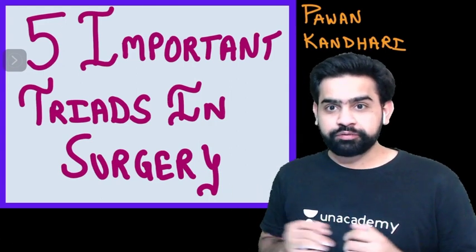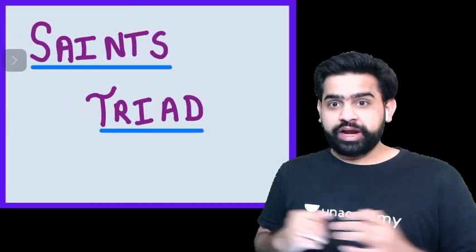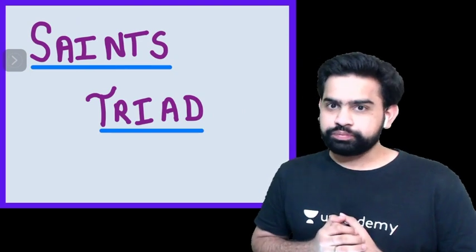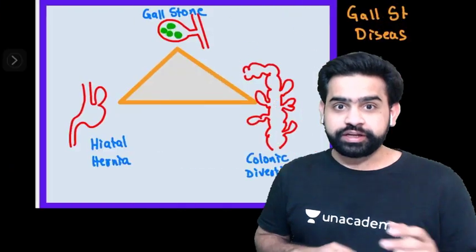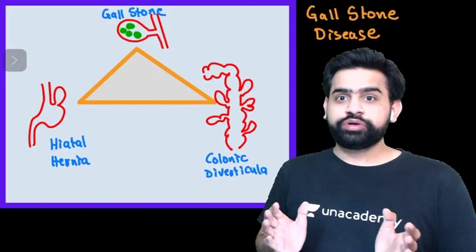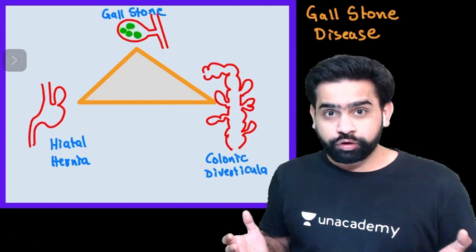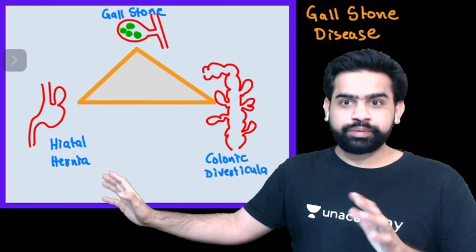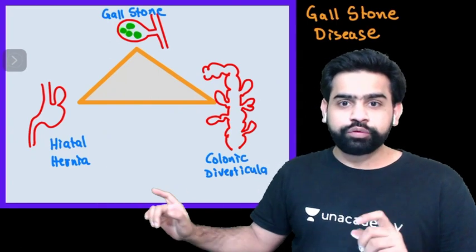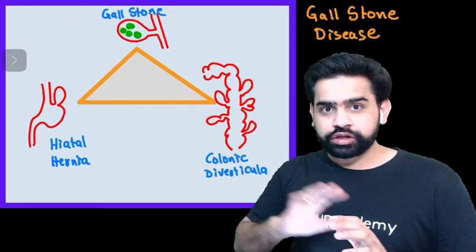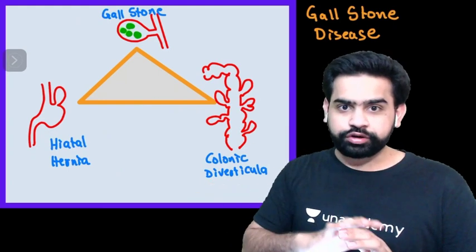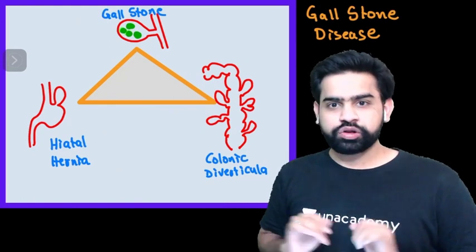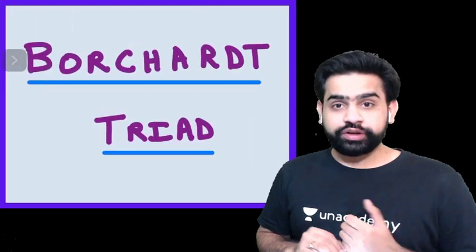Let us begin with the first one: Saints Triad. If you recollect that Saints Triad is something seen in gallbladder stones, you're absolutely correct. It consists of gallbladder stones, a hiatal hernia — as shown in this small schematic diagram — along with colonic diverticulum. Just remember this simple one-liner.